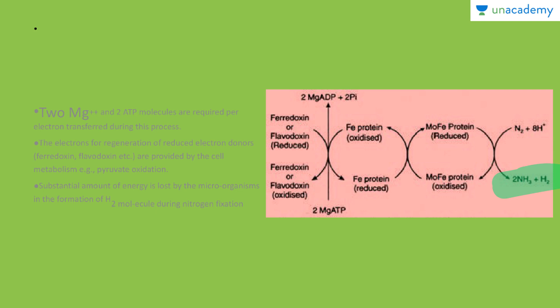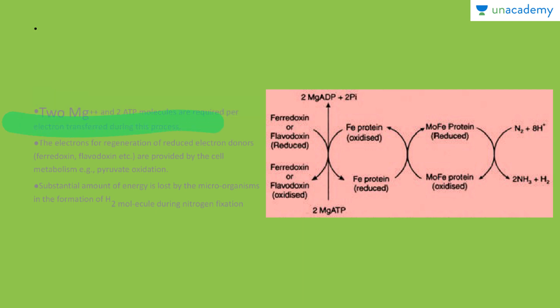The presence of magnesium is essential for this process. ATP is also required, and due to the breakdown of ATP, ADP and inorganic phosphate are produced. Two magnesium ions and two ATP molecules are required per electron transferred. The electrons for regeneration of the reduced electron donor — ferredoxin or flavodoxin — are provided by cell metabolism, specifically pyruvate oxidation.